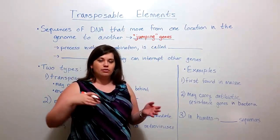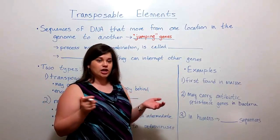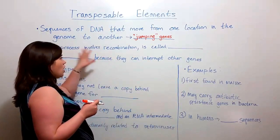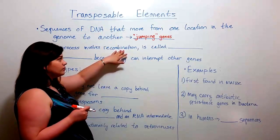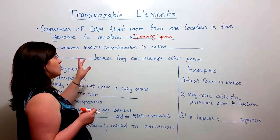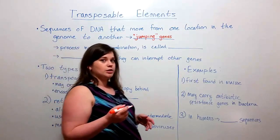Again that's because they can jump from one place in the genome to somewhere completely different in the genome. Now the process of moving from one place to another involves recombination and specifically when we're talking about transposable elements, this movement is called transposition.